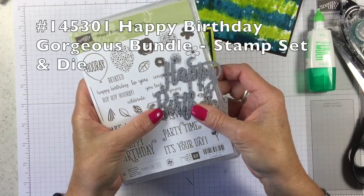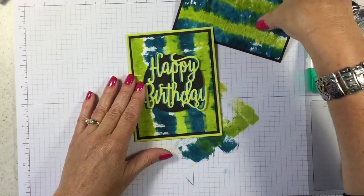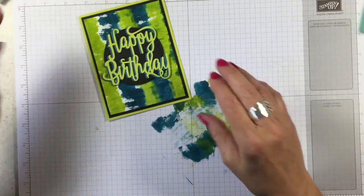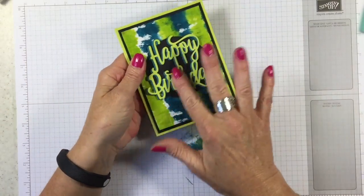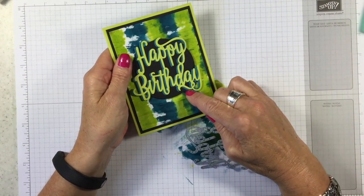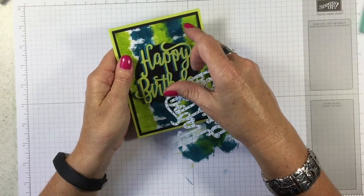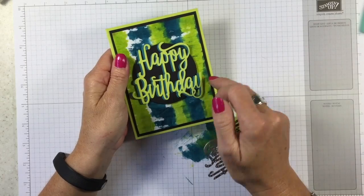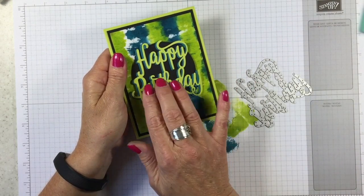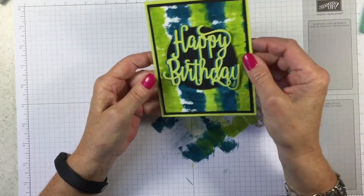So Happy Birthday Gorgeous, and this particular framelit is called Happy Birthday Thinlits and I'll have the numbers up on the screen for you if you're interested in buying this. You can head right over to my store. Okay are you ready to see the other creations that I made? Oh let's get back to this first. Here's my Happy Birthday, I cut out an Island Indigo and a Lemon Lime Twist, which I don't remember if I said the colors that I use but that's what they are. I cut out one in each color and then I just kind of offset them a little bit so I glued the Lemon Lime over the Island Indigo and it gives you that really fun look on the words here.